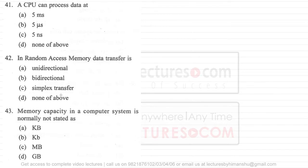Welcome. In this video, let us look at questions 41 to 50. Question 41 says a CPU can process data at—actually, this question is completely wrong. They should not ask this kind of question in the examination because it totally depends on the CPU architecture and the kind of instruction being executed.